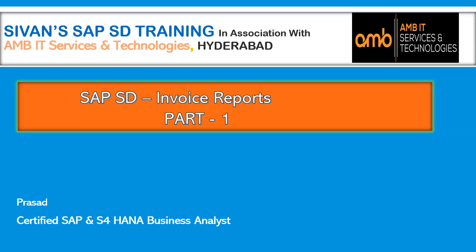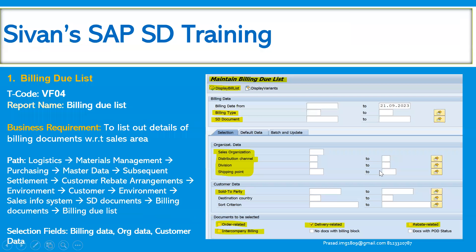Let us get into the system. Billing due list — we all know this transaction code VF04, which will display the number of outbound deliveries which are due for billing.